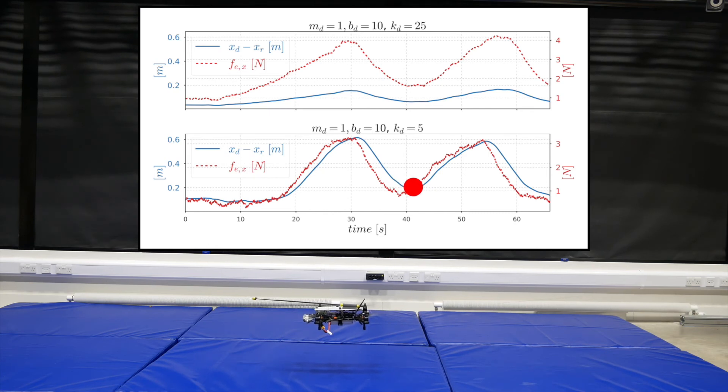The red tracking dot illustrates how the motion of the quadrotor is shaped by the external force in the case of the less stiff system, that is, K equal to 5.